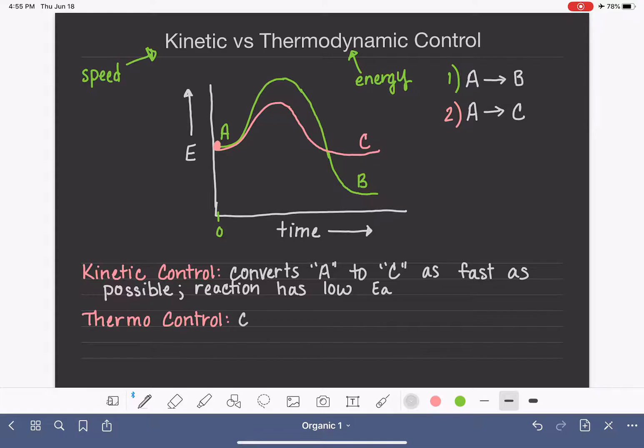And so when we have a reaction that's being run under thermodynamic control, this is a process where we convert our reactant to the lowest energy product that is possible.